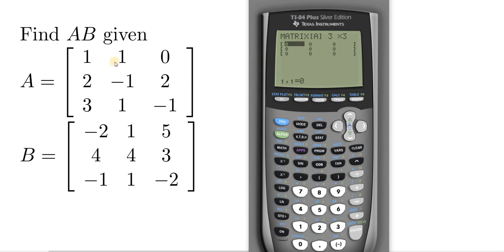Okay, once you get here you have to enter each number, and then you want to hit enter after you enter the number. So 1, enter. 1, enter. 0, enter. 2, enter. 1, enter. 1, enter. 2, enter. 3, 1, and negative 1. So we're good.